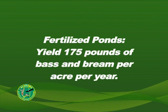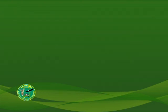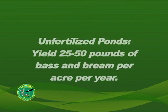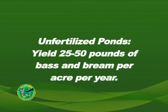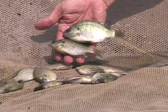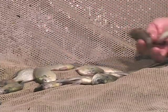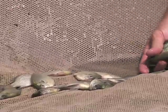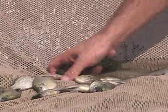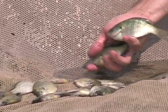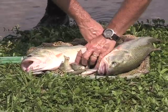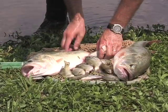Ponds that are fertilized and managed properly can yield about 175 pounds of bream and largemouth bass per acre per year. In comparison, unfertilized ponds will yield only 25 to 50 pounds per acre annually. The total weight of fish that a pond supports may be comprised of many fish too small to be desired by anglers, or a lesser number of large fish.